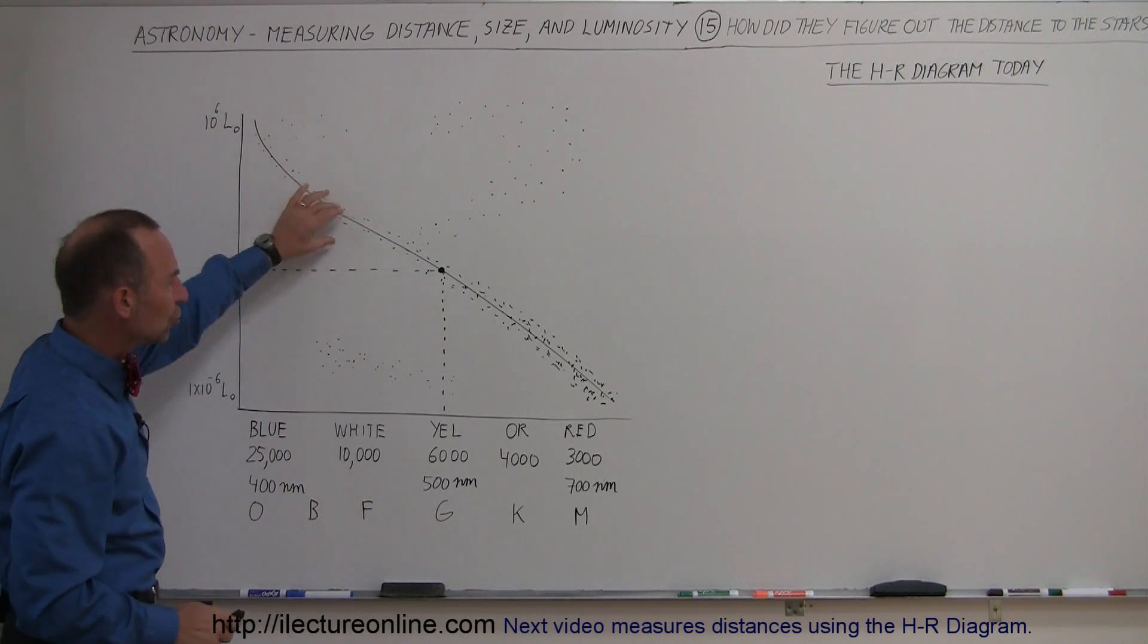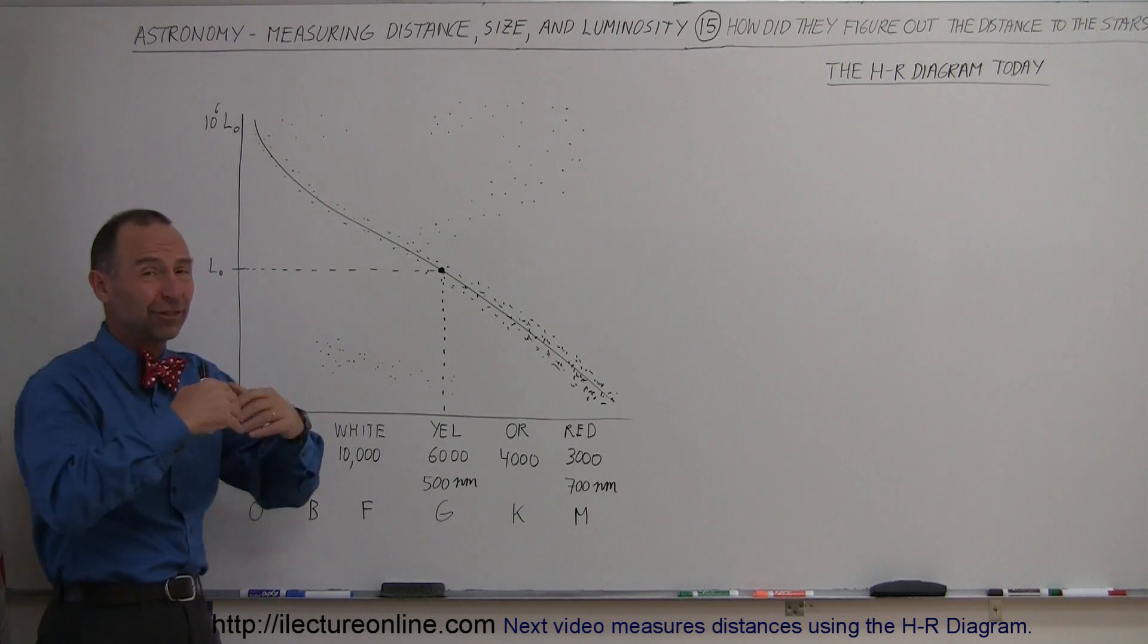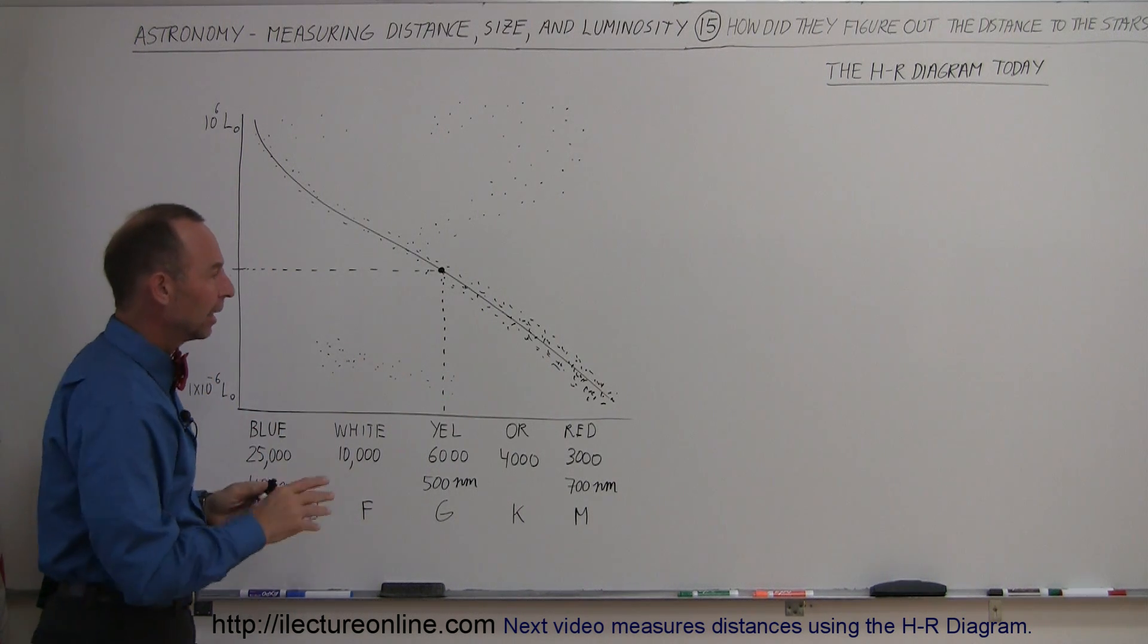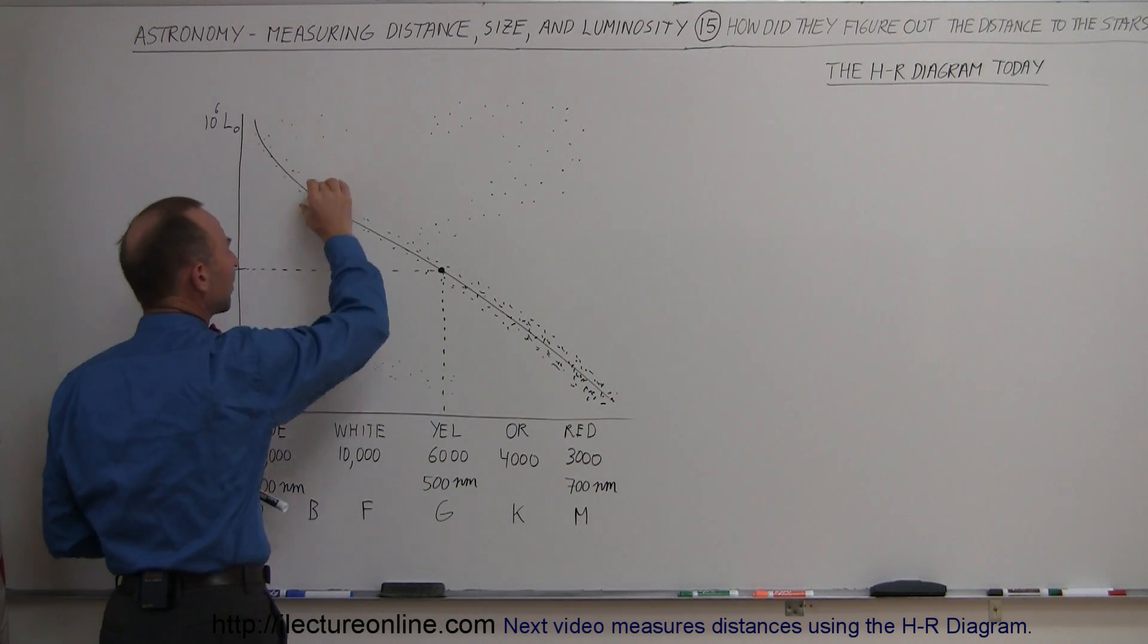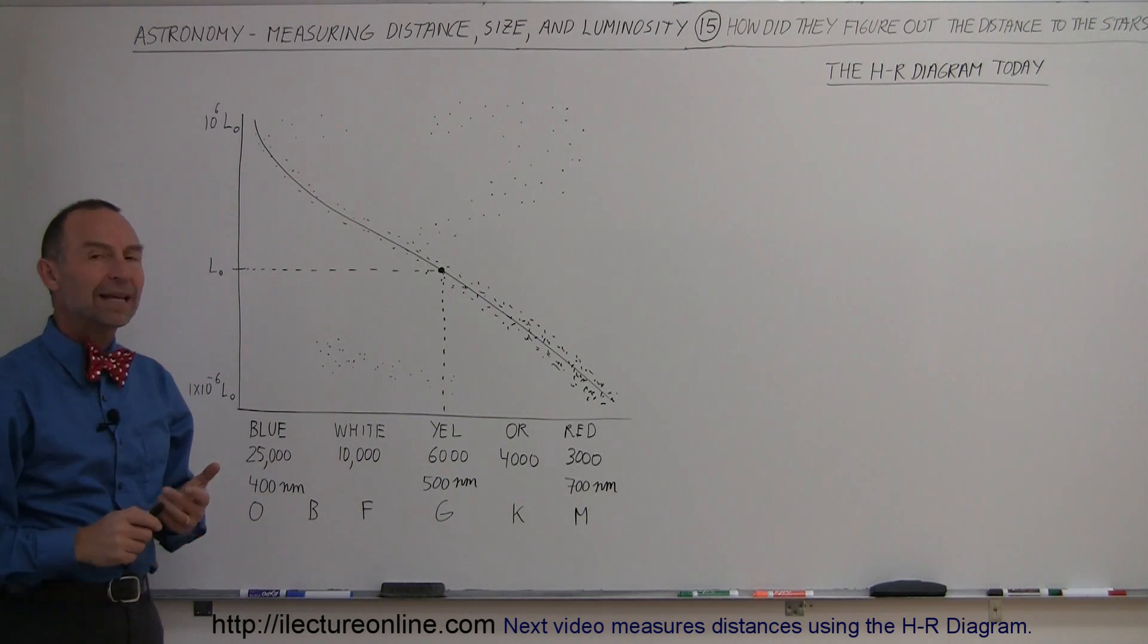And they now call that region here on the diagram. Now remember, this is just a diagram region. It's not a physical region out in space. It just represents something about stars. It represents that these are the stars that are in their main cycle of life, their main sequence of life as they call it. Therefore, we call this the main sequence.